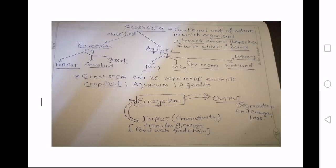One is the terrestrial ecosystem, another is the aquatic ecosystem. The terrestrial ecosystem comes under land ecosystem. Examples are forest, grassland, and desert. In the aquatic ecosystem, you can view the pond, lake, sea, wetland, and estuary. What is an estuary? It is the place where the rivers meet with the ocean or the sea.